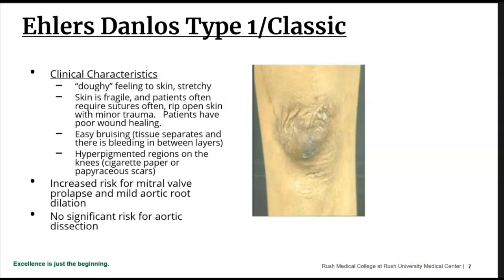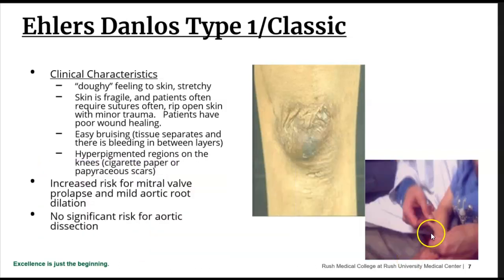Let me talk about one of the classic forms — Ehlers-Danlos type 1. Clinical characteristics include doughy skin that feels like you're kneading dough — very stretchy and very fragile. These patients often require sutures because the skin rips open with minor trauma, and they also have poor wound healing — not a good combination. They have easy bruising, which occurs when you separate tissue and there's bleeding in between, because their connective tissue does not work well.